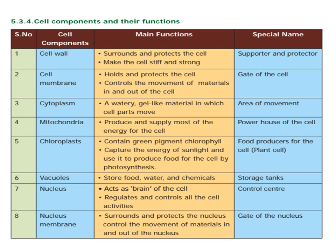Chloroplast contains green pigment chlorophyll. It captures the energy of sunlight and uses it to produce food for the cell by photosynthesis. It is called the food producer for the cell.